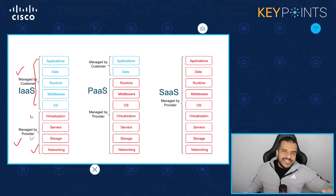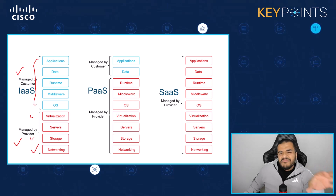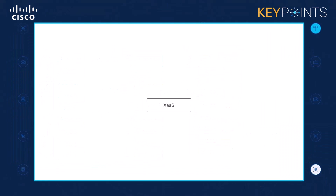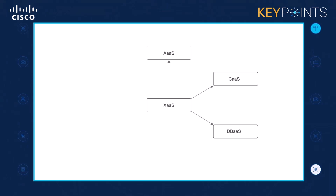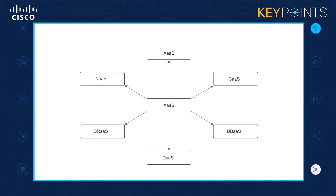There are lots of other models that could be defined, but the most common three are IaaS, PaaS, and SaaS. Beyond those, we have anything as a service — XaaS — because lots of cloud service providers nowadays can offer really anything. For example, there's containers as a service (CaaS), database as a service (DBaaS), and desktop as a service (DaaS). The list keeps going — lots of service models can be offered by those different cloud providers.